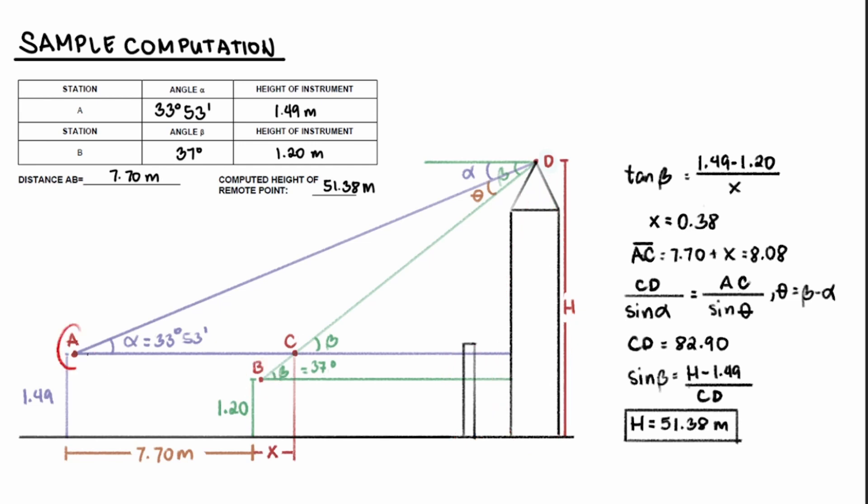Point A represents the position of theodolite at Station A. And based on the measured height of the instrument taken earlier, height of point A is 1.49 meters. Next, point B represents the position of the theodolite at Station B. From here, we measured angle beta, which is from the horizontal to the top of the tower as well. The height of the instrument taken at this point is the height of point B, which is 1.20 meters.